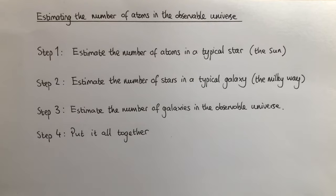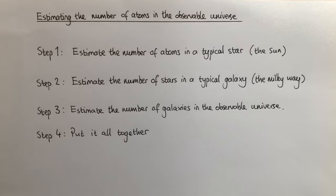In order to estimate the number of atoms in the observable universe, I am going to assume that the vast majority of atoms live inside stars, and that those stars live inside galaxies. With these assumptions, our calculation can be broken down into a number of steps. The first step is to estimate the number of atoms in a typical star, and we will use the Sun as an example of a typical star.